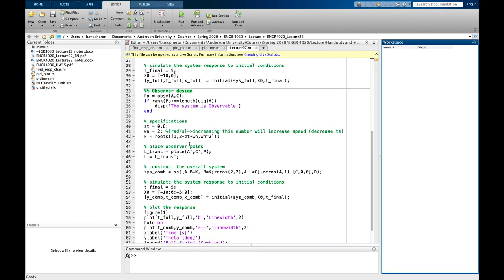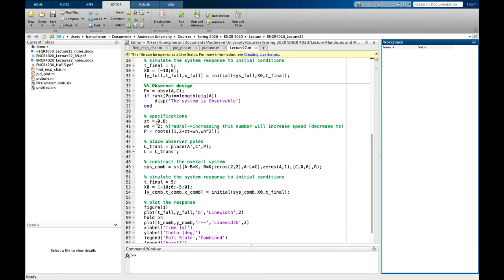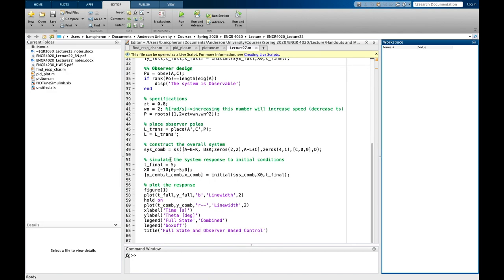Once I've done that, I designed my observer, I check observability using OBSV. And then the next thing I do is I say, well, I know I want Zeta to be 0.8 and Omega N to be two. And so I find those roots. And then I again use place to place my, to place my, to get my L matrix. But my L matrix is actually going to be in the wrong dimension using this place command. So what I'm doing is I'm taking a prime C prime. These are the transposed versions of these matrices to make the dimensions work out. And then L itself is actually just the transpose of that.